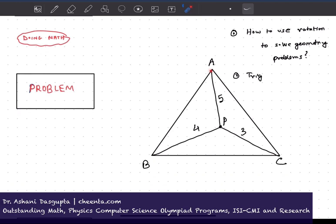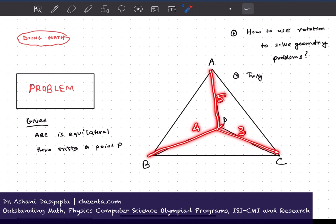What it says is that we have an equilateral triangle ABC. That's the first given data. ABC is equilateral. And there exists a point P. So I have drawn it here, the point P such that PA is 5, PB is 4 and PC is 3. That's given.